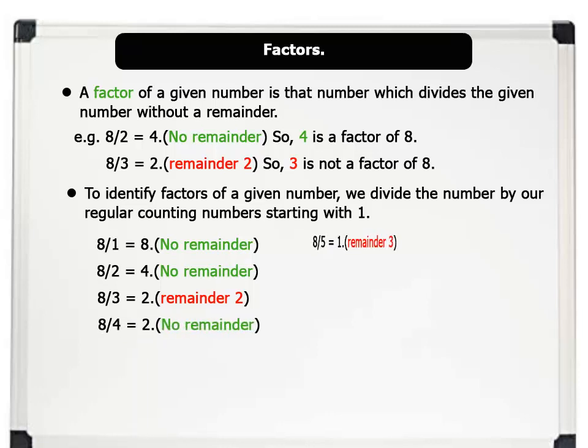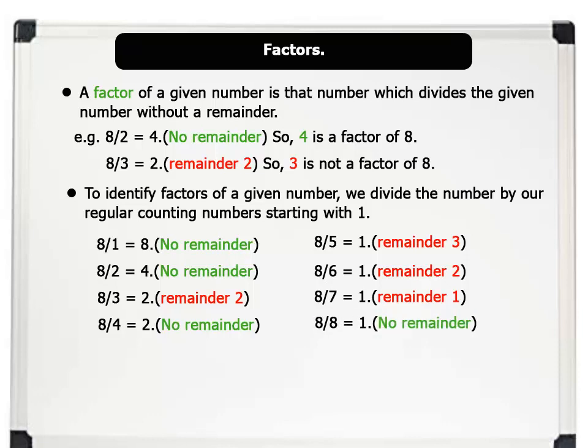5 divides 8 equals 1 remainder 3. 6 divides 8 equals 1 remainder 2. 7 divides 8 equals 1 remainder 1. And 8 divides 8 equals 1 with no remainder.